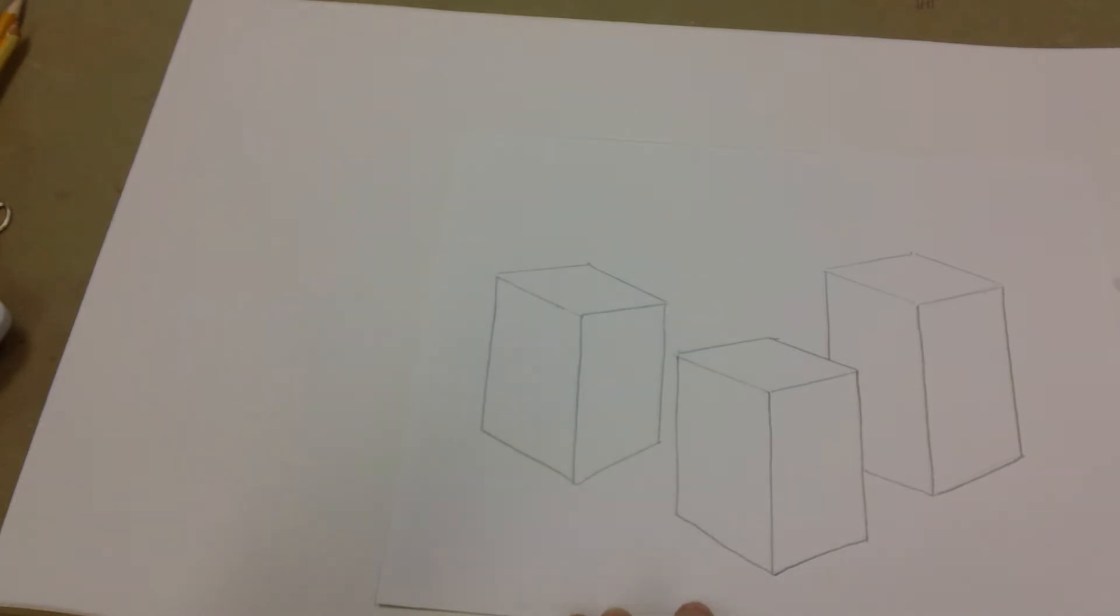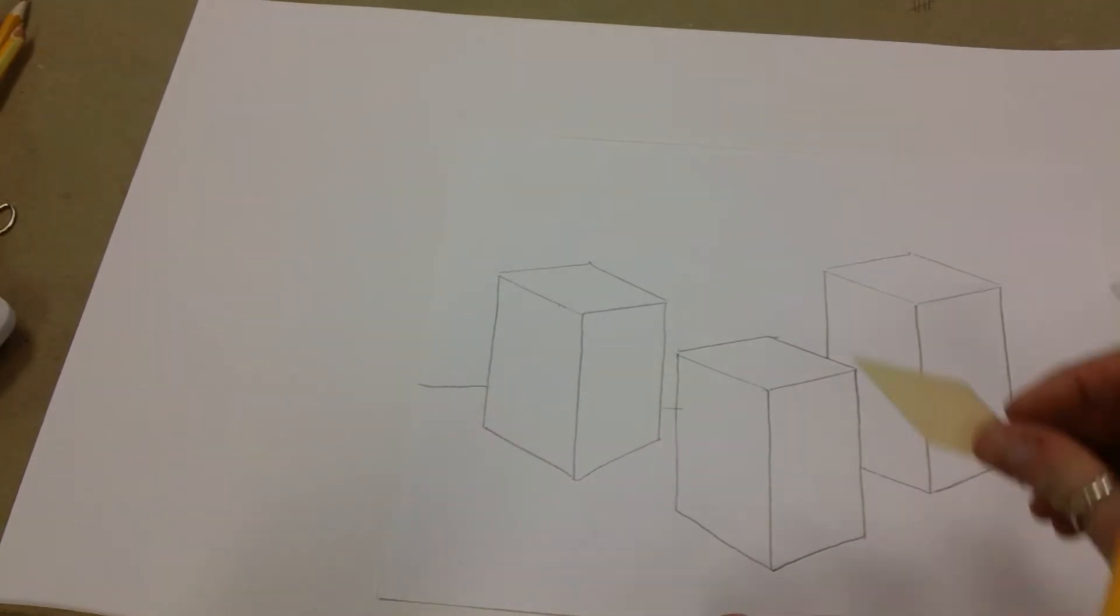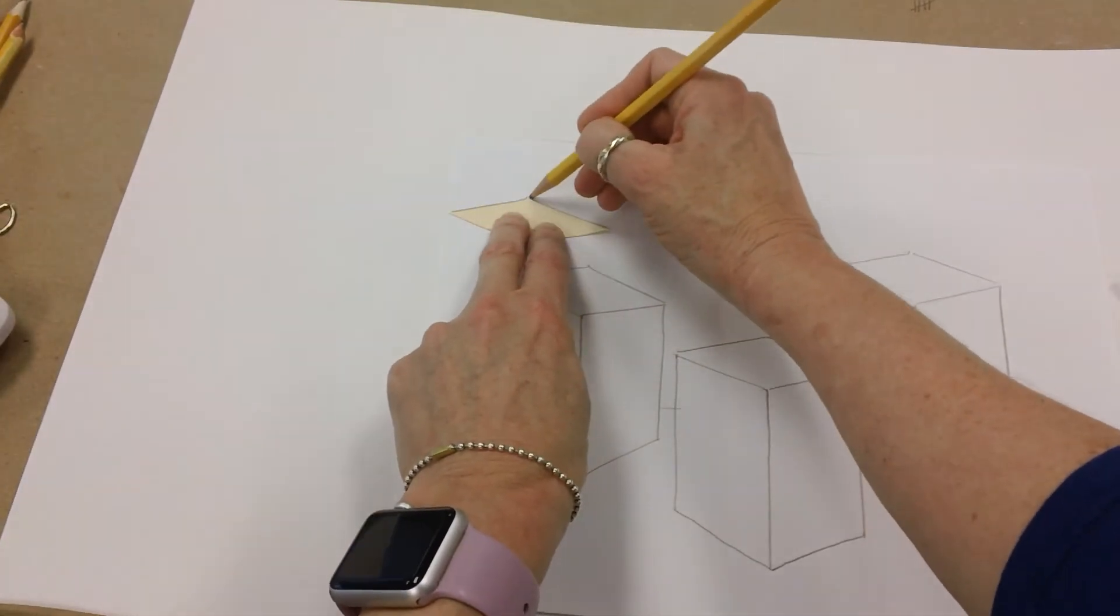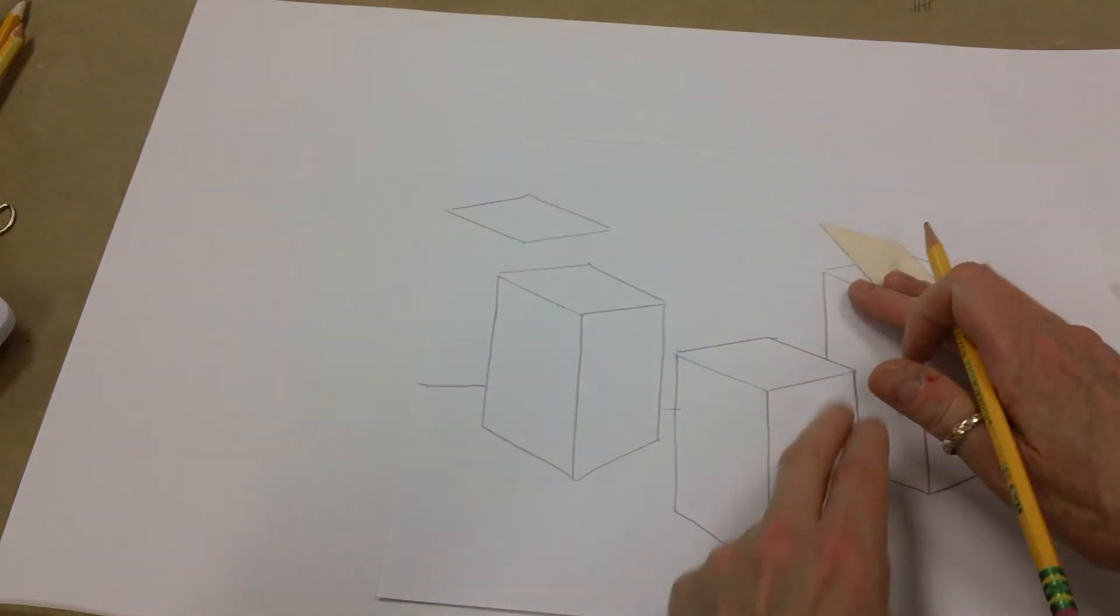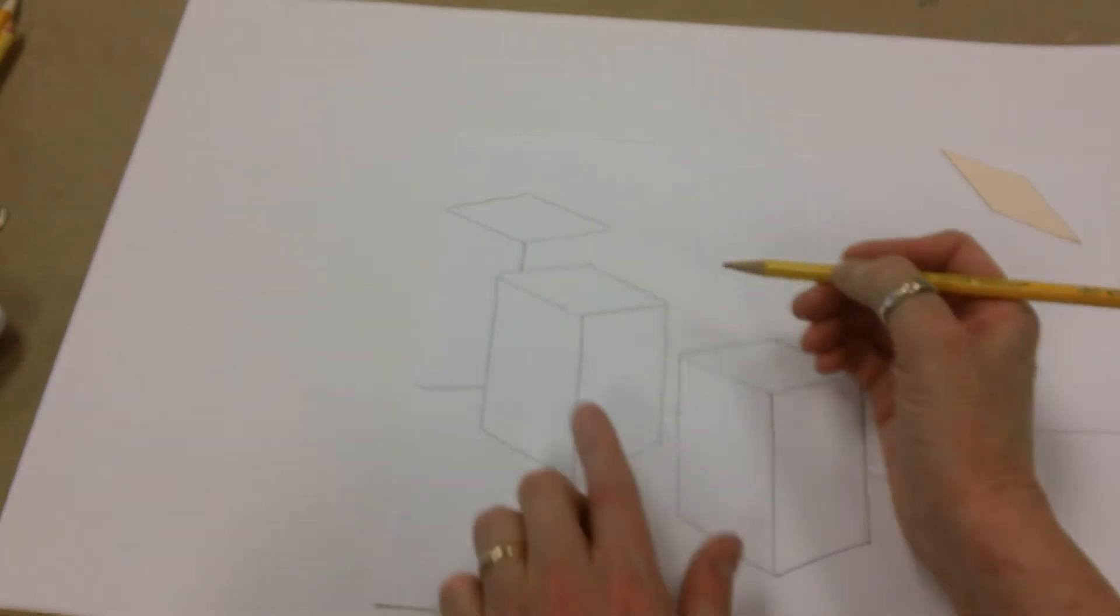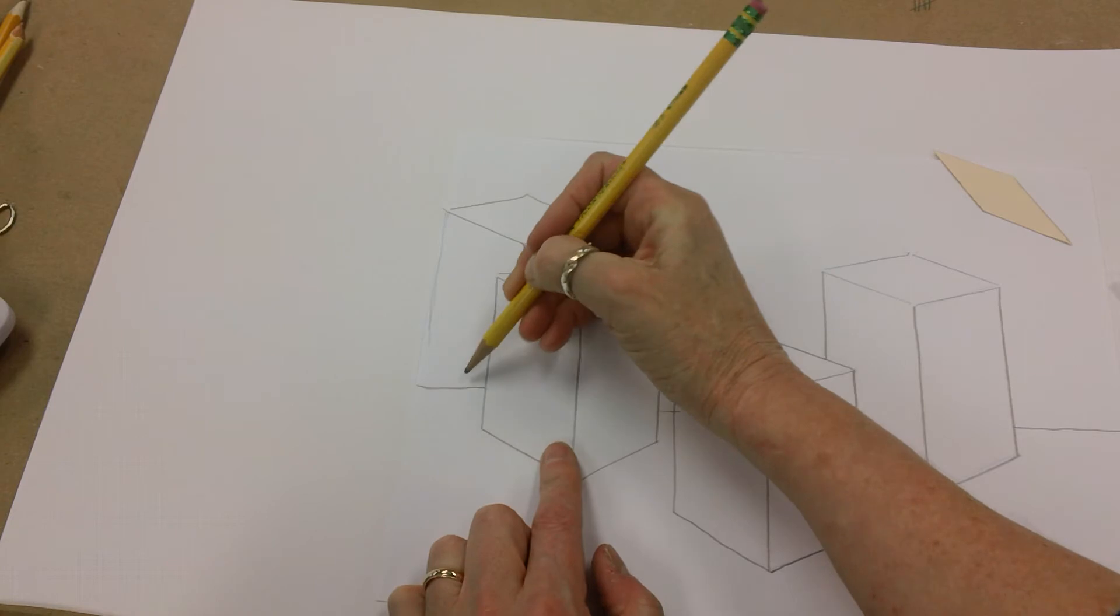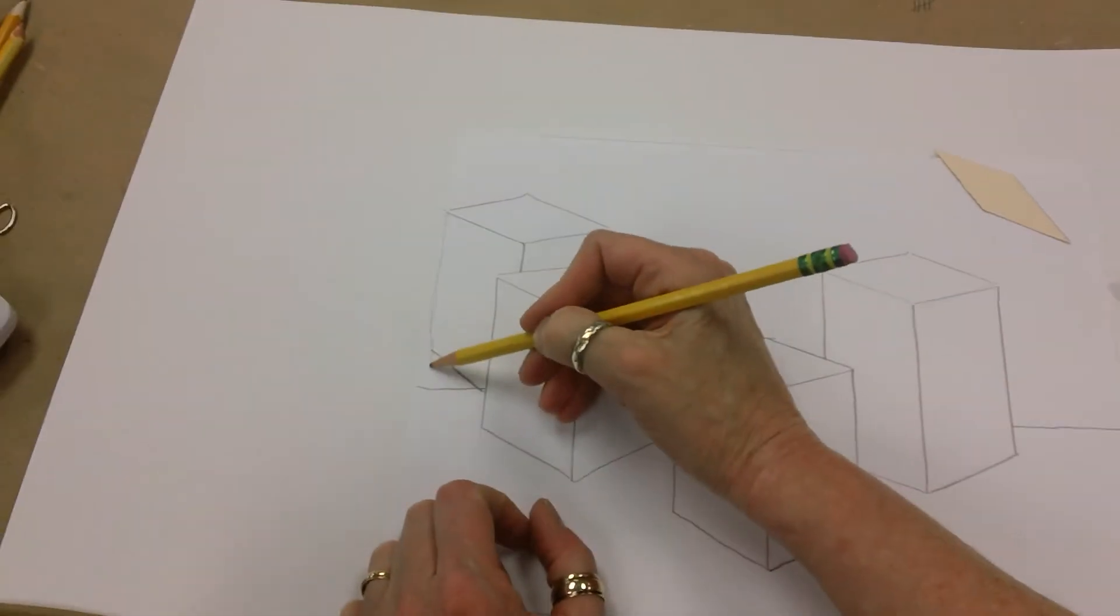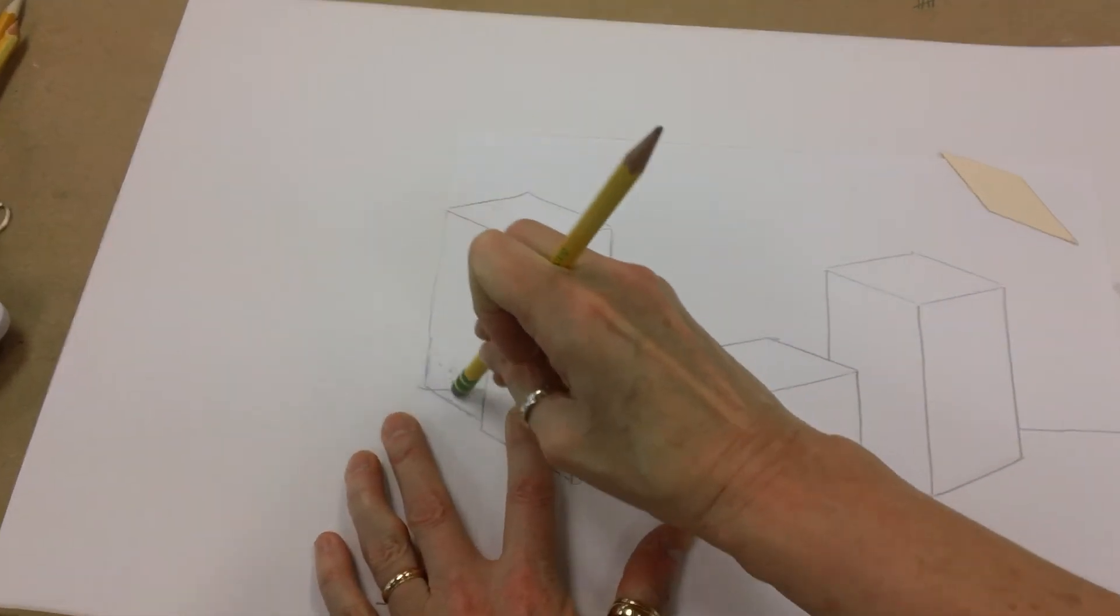And then I can maybe add the ground line behind here. And maybe I'll do another building here. All you're doing is practicing, so no worries about making any mistakes. This building is hidden behind this one and this comes down here. So I just have to kind of guess. Oops, it's really not...maybe I should come down a little bit farther like that. And then just erase what I don't want.